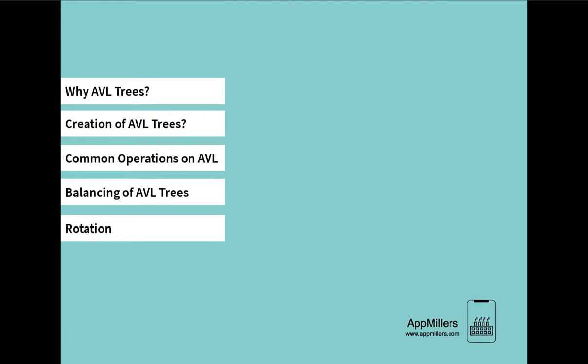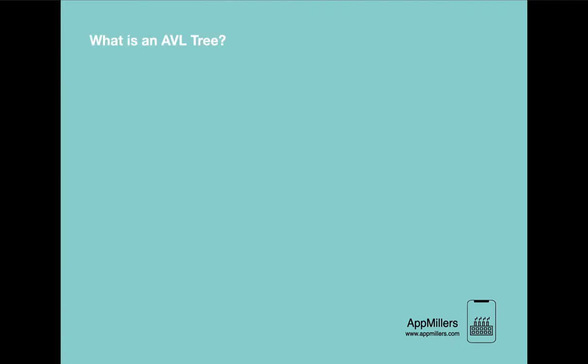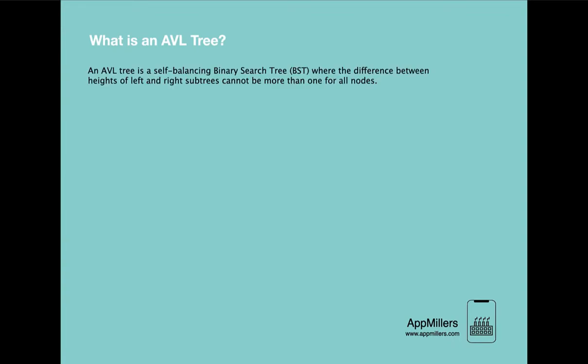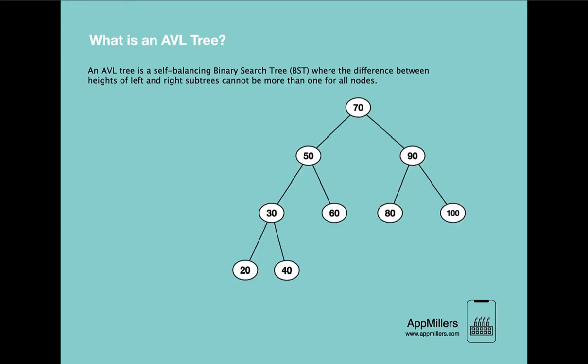In this first lecture let's see what is an AVL tree. By definition, an AVL tree is a self-balancing binary search tree where the difference between heights of left and right subtrees cannot be more than one for all nodes.